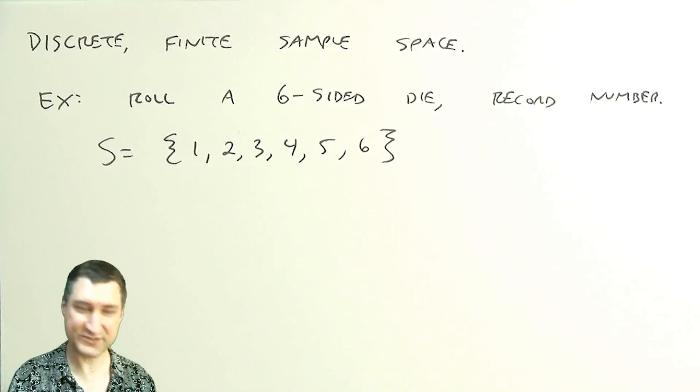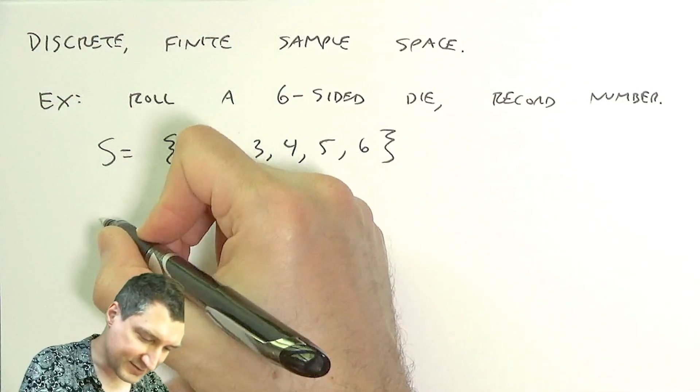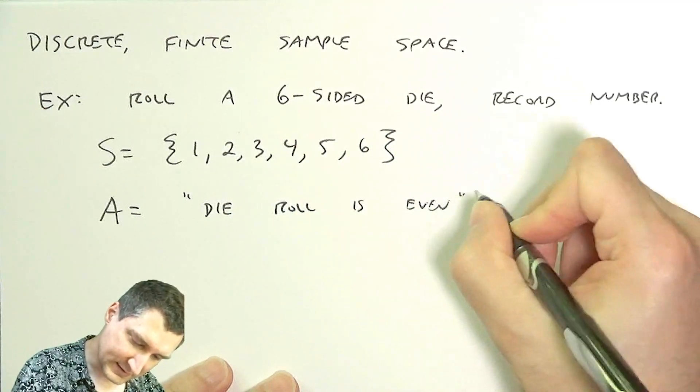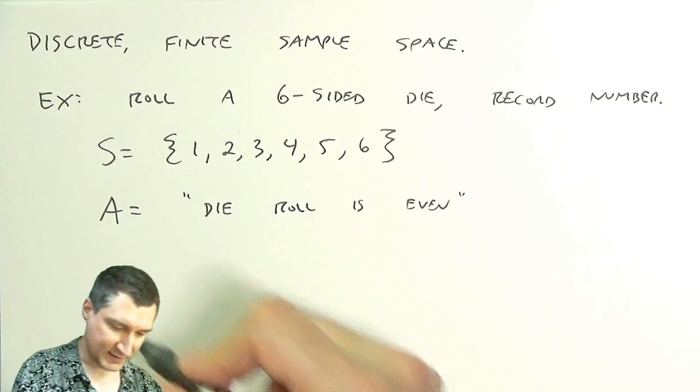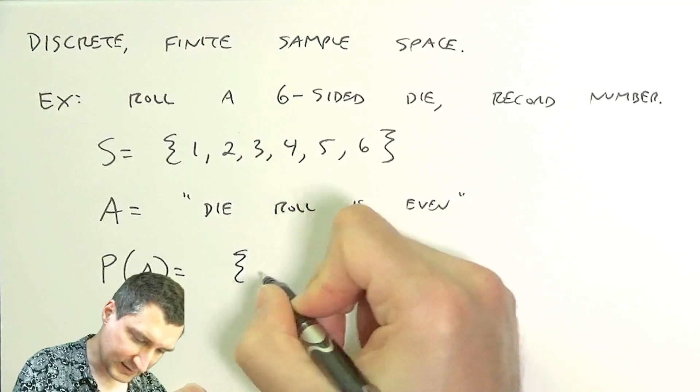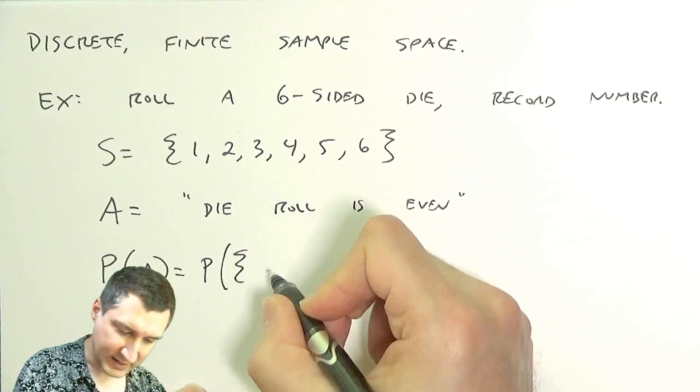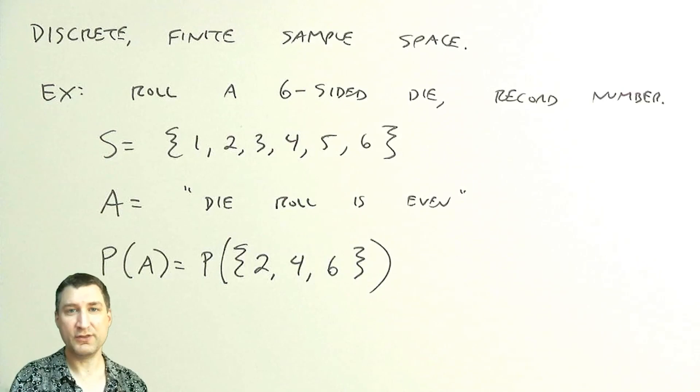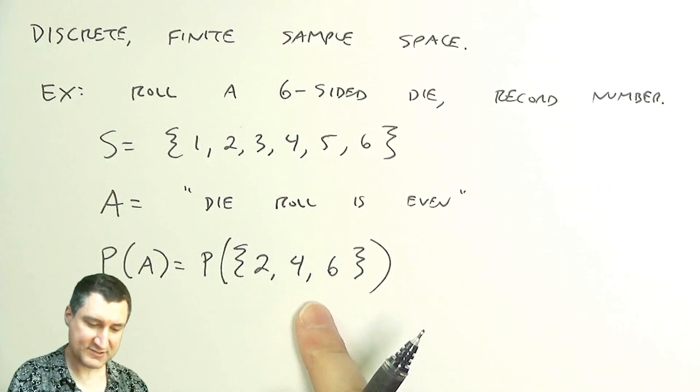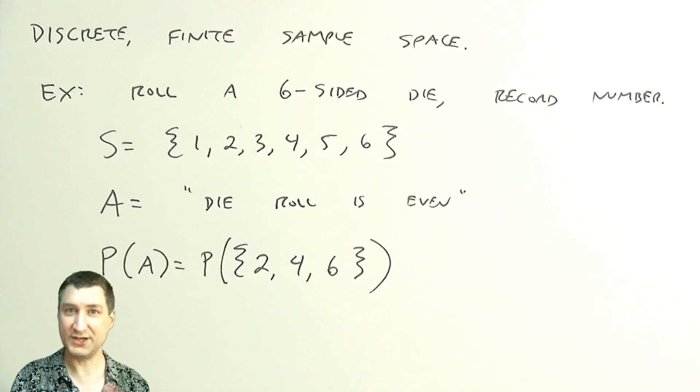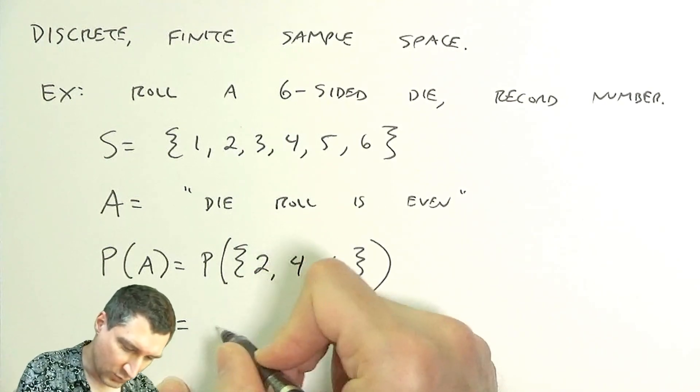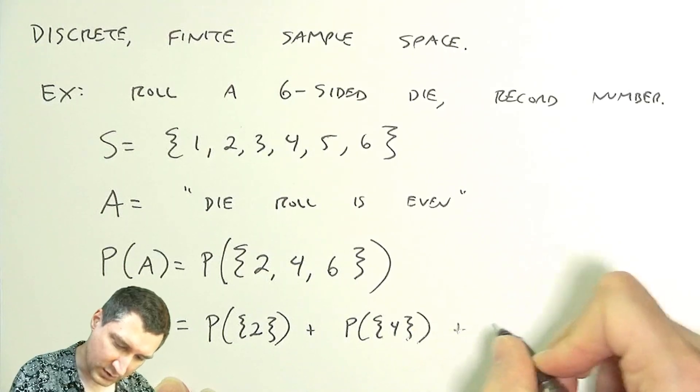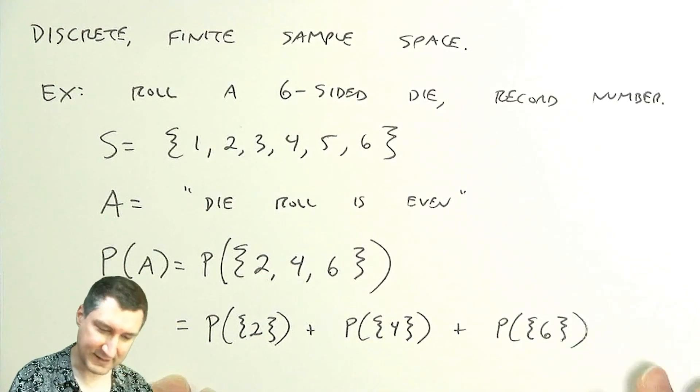Let's now consider this event: the die roll is even. What's the probability of this event? Well, the probability of this event is the probability of getting 2, 4, or 6. We know from what we talked about last time this event we could take apart into each of its individual outcomes, each of which is a disjoint event. So we could say that this is equal to the probability of rolling a 2 plus the probability of rolling a 4 plus the probability of rolling a 6.